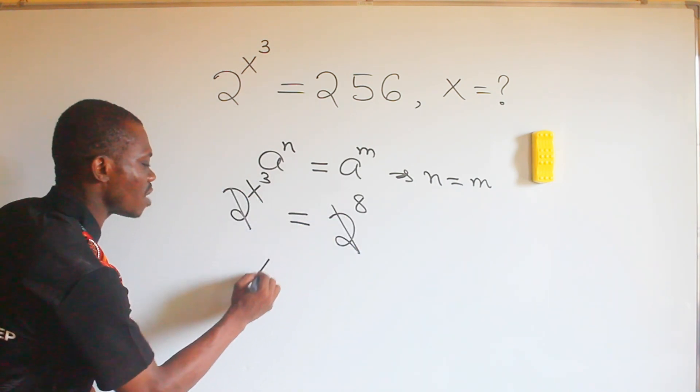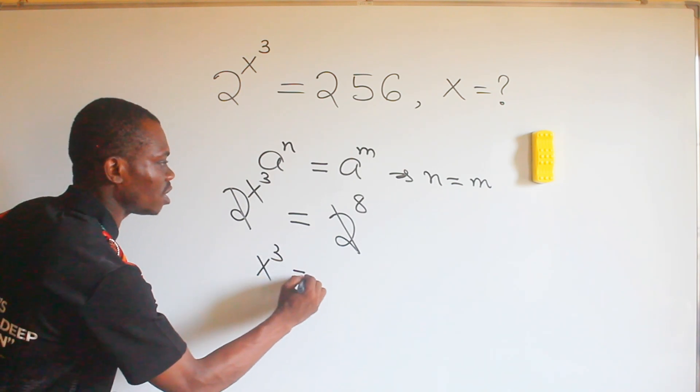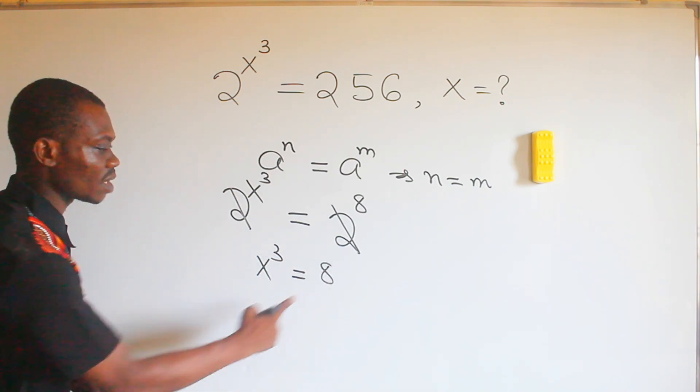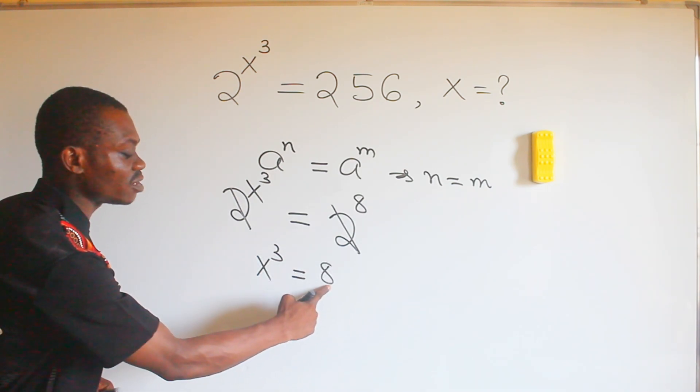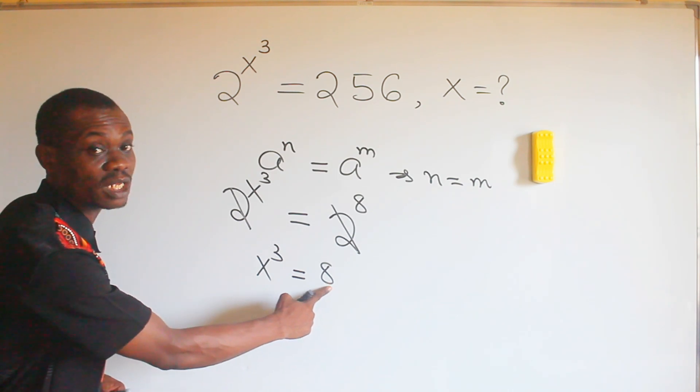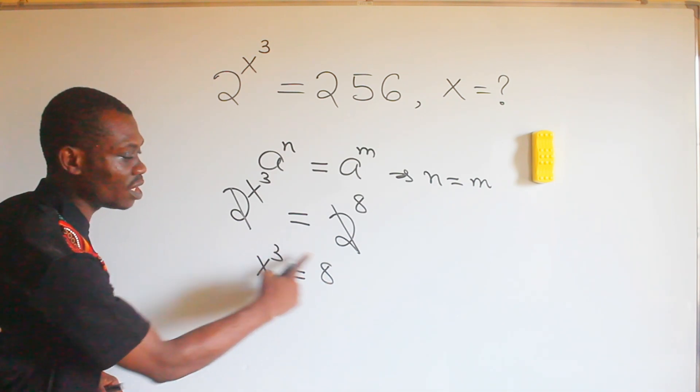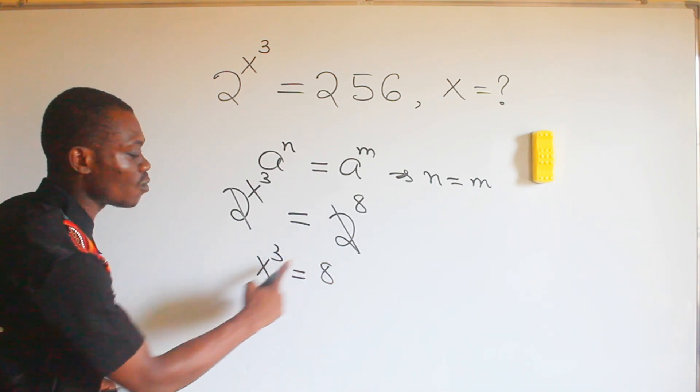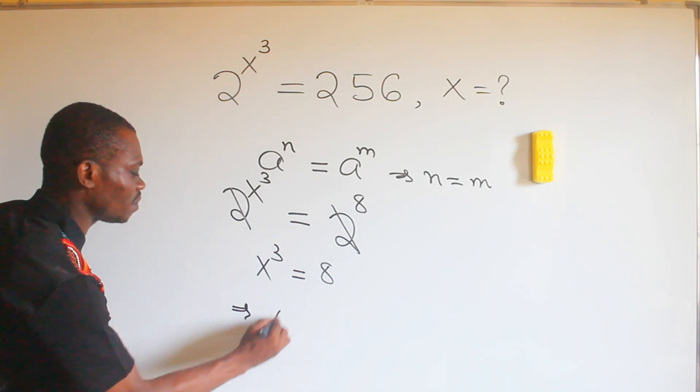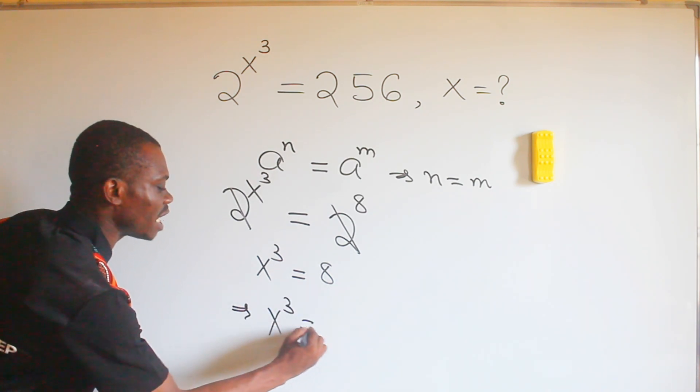And so equal bases are the same, so you take them away and you will have x raised to the power of 3 equal to 8. But then again we can see how to write 8 to be in index form where the power will be 3, so that when the powers are equal the bases will also be equal.